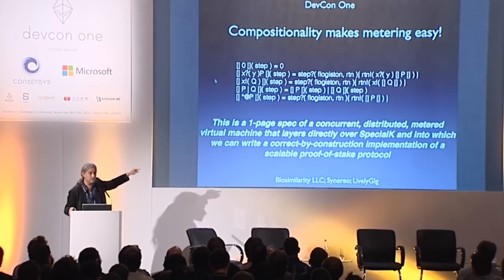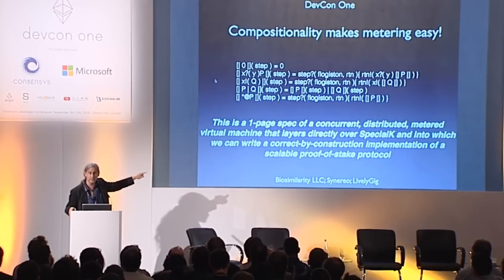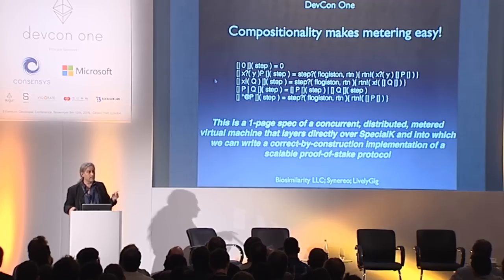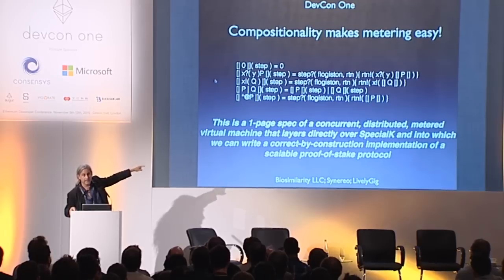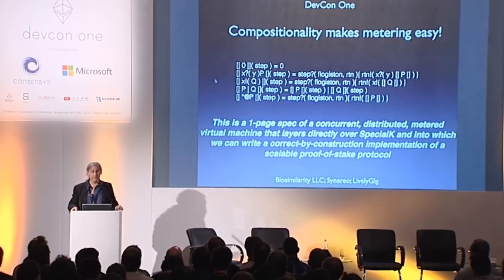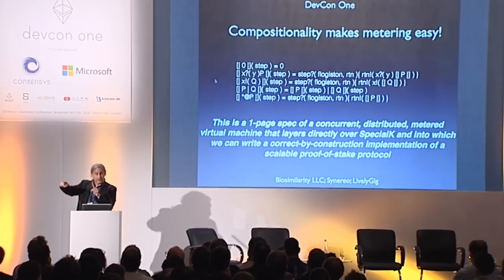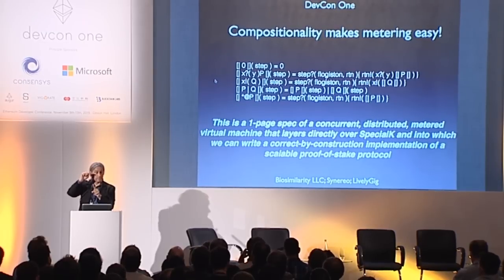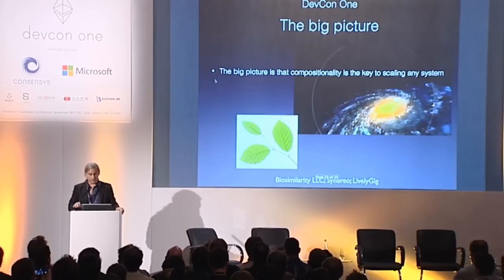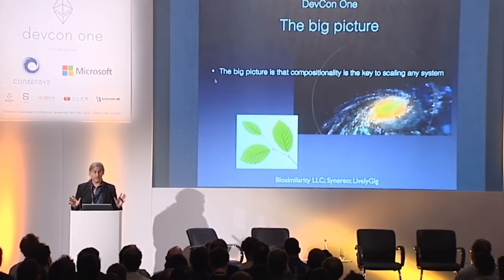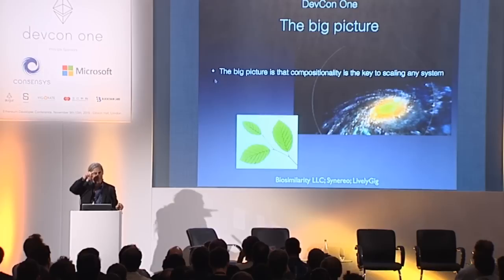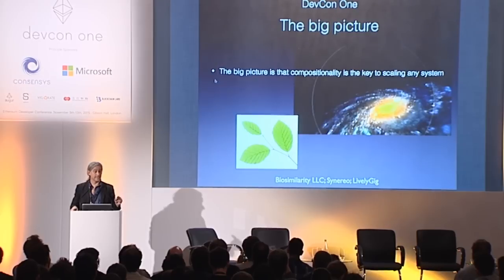You can take this kind of virtual machine and bootstrap — build this virtual machine on top of itself. It would be interesting to look at doing that with the existing VM. Could we build the Ethereum blockchain on top of the existing VM? Does it bootstrap? That brings us back to the point I was trying to make at the very beginning: do we have this self-loop? Because that's your first and best test that you can scale. Compositionality — finding the small in the large and the large in the small — is the key to scaling any system.